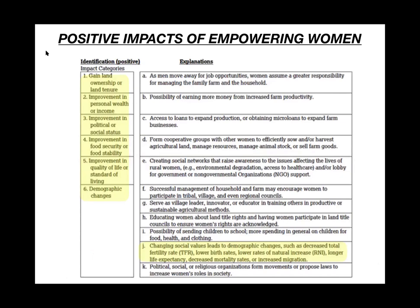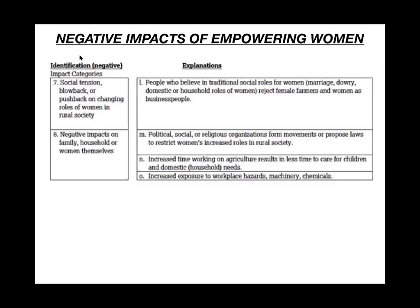For the impacts of empowering women, you get one point for identification and one for explanation. Acceptable answers include: gaining land ownership or tenure, improvement in personal wealth, improvement in political or social status, improvement in food security, improvement in quality of life, or demographic changes. Many students wrote that changing social values leads to decreased TFR and lower birth rates. There are also negative possible impacts, like social tension or negative impacts on the family — for example, people who believe in traditional roles rejecting female farmers as business people.